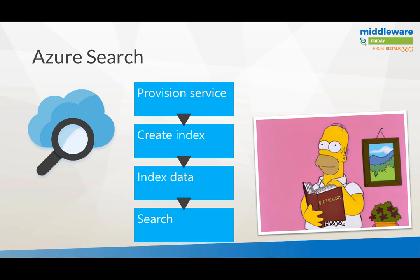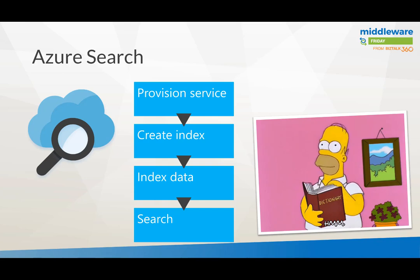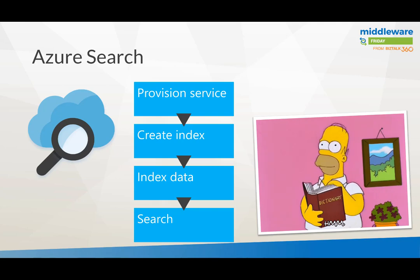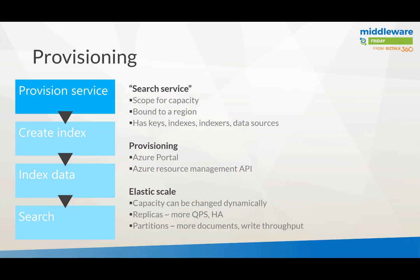It involves a few steps when working with Azure Search. You provision the service — which is obvious. You create an index, you index your data, and then you apply search to it. Provisioning is done either through the Azure portal or through the Azure Resource Management API, so you can call an API and then provision the service, create an index, query an index — you can do that type of stuff.